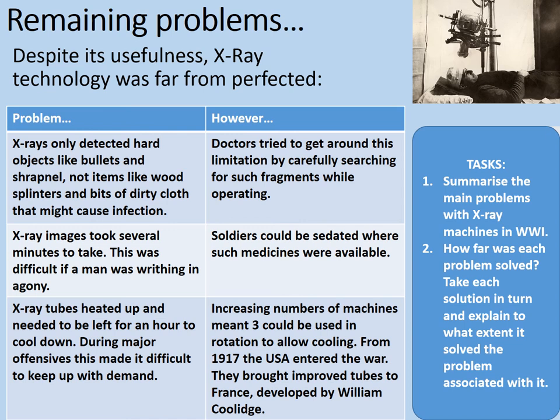The writhing around of men in agony was really well solved if a sedative could be administered — painkillers were often a standard part of the procedure, though reliant on supplies being available. The cooling problem was solved, but only to an extent — you wouldn't always have three machines in operation at the same time, and a major offensive might result in even more casualties than you could cope with. It's good that the USA brought improved supplies after 1917, but this was only late in the war. So we can only say the problem of x-ray tubes heating up was solved to a small extent.